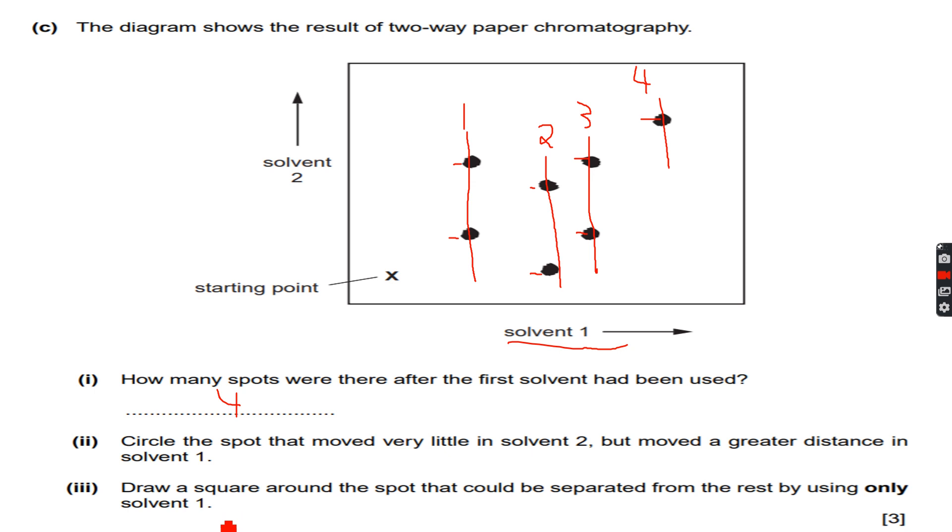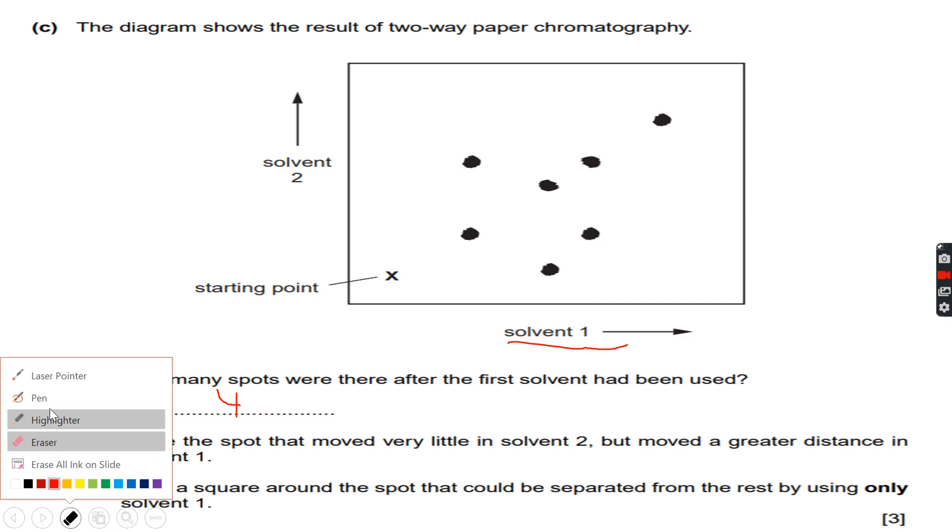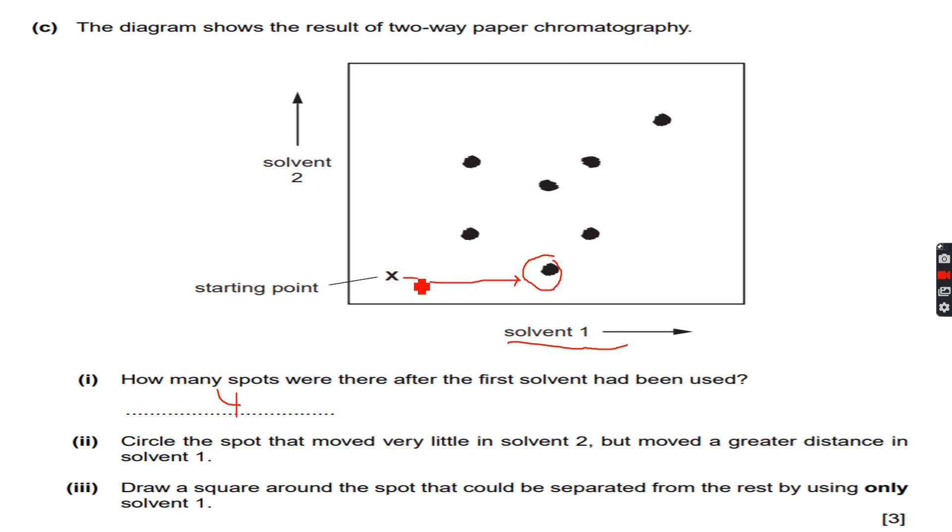Circle the spot that moved very little in solvent 2 but moved a greater distance in solvent 1. We have to circle the spot that moved very little in solvent 2 and moved a greater distance in solvent 1. It will be this spot because if you see, it has moved in solvent 1 but it has not moved in solvent 2 at all.